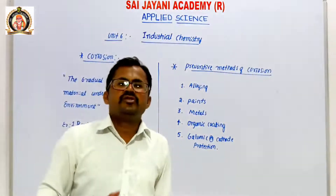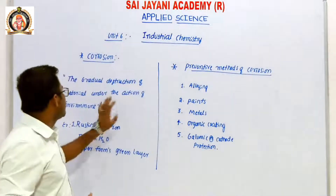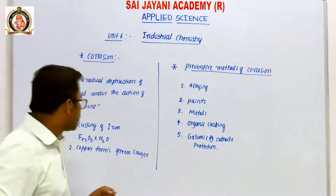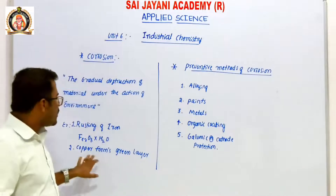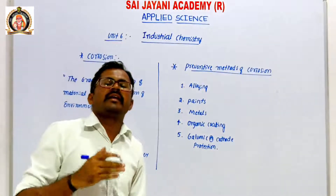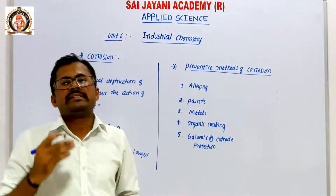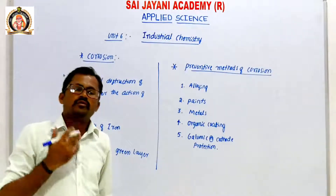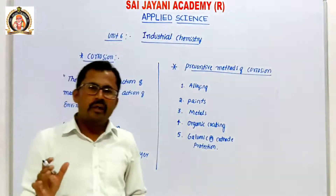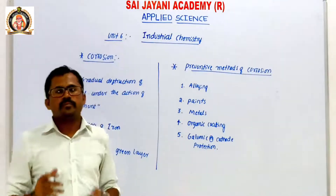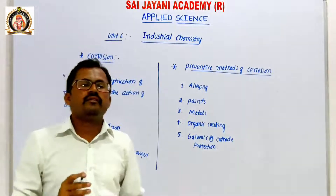So corrosion is the gradual destruction of material, gradual loss under the action of environment. For example, rusting of iron and copper forming a green layer. Atmosphere and environmental conditions are the main causes for corrosion. The main reason for corrosion is water.